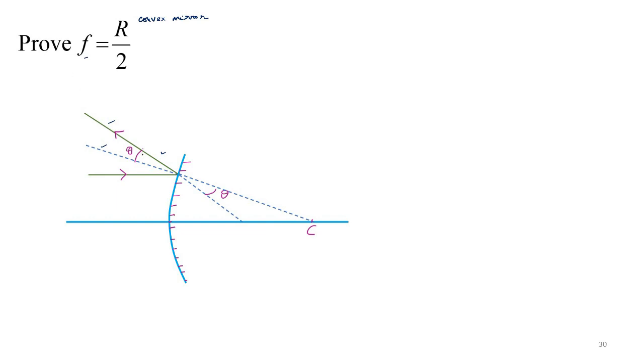This angle is theta. Because angle of reflection theta, this is vertically opposite angle. So that is also theta geometrically. Angle of incidence is theta here. Angle of incidence. If this is theta, this is also theta.